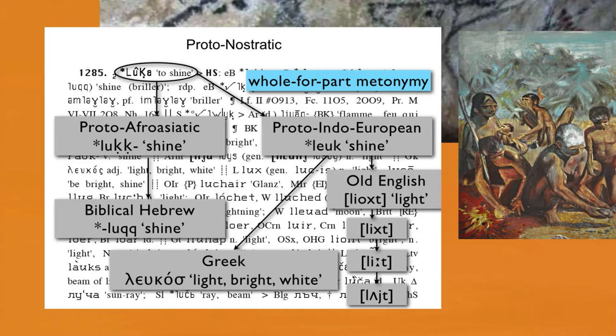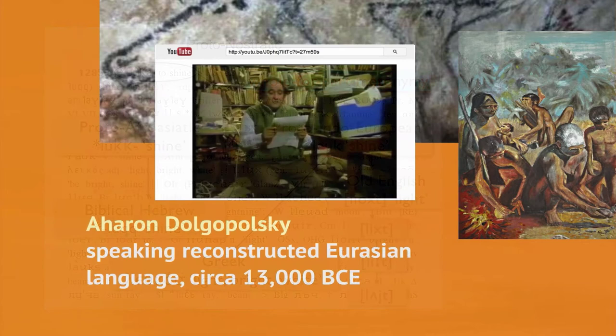That language is the ancestral source of many languages now spoken all over the globe, as well as many others that have vanished, but were once spoken by ancient cultures with homelands in Europe, Asia, and North Africa. Let's listen now to Professor Dolpolsky as he gives us a glimpse into the world of our ancient Eurasian ancestors, as it can be reconstructed from the language that they spoke.